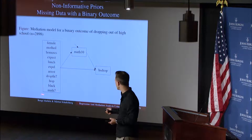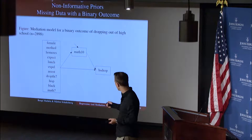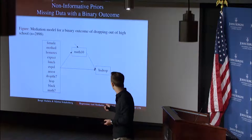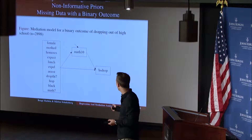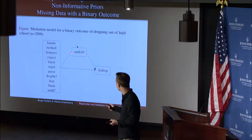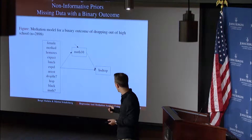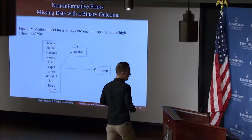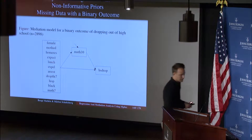So we have a mediation model with a binary outcome, and we also have missing values on math10 and actually also on some of the covariates. So we have missing data on the mediator and on some of the covariates.